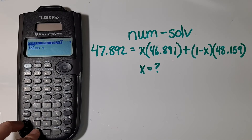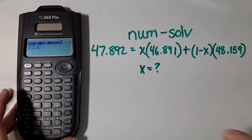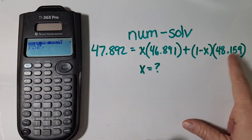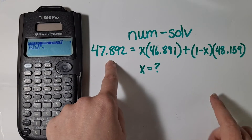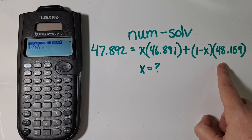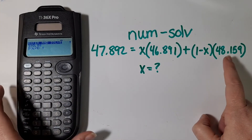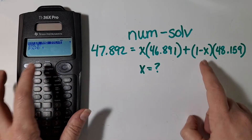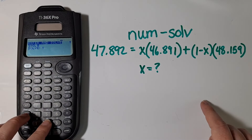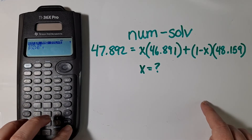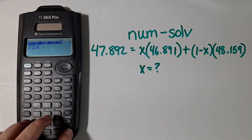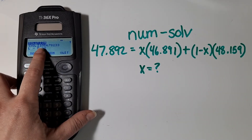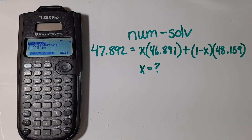I'm going to type in 0.8 — I think it's a bit closer to this number because what it's equal to is closer to that number. But wait, this is a 1 minus x, so it's probably less than 0.5. I'm going to type in 0.2. I'll hit enter and then it's going to calculate what my x is.